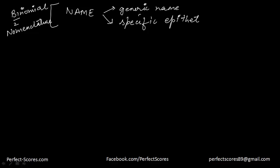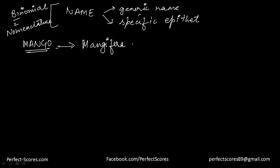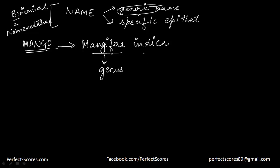For example, let's take the commonly known fruit mango. Mango is scientifically known as Mangifera indica. Both of these are two different components of the scientific name. Mangifera actually refers to the genus — the generic name — and indica is the epithet, the specific name.